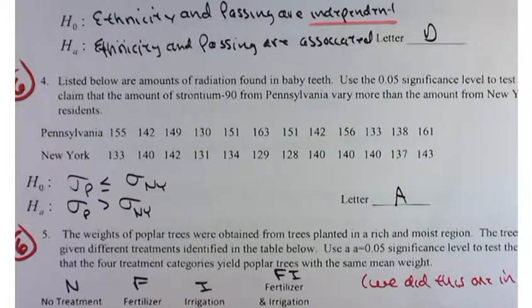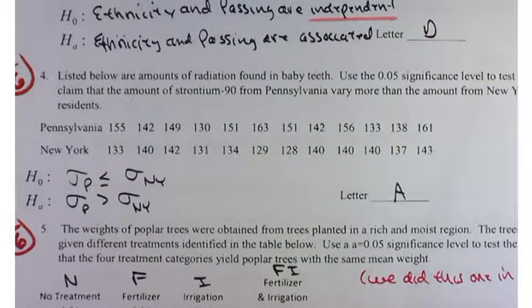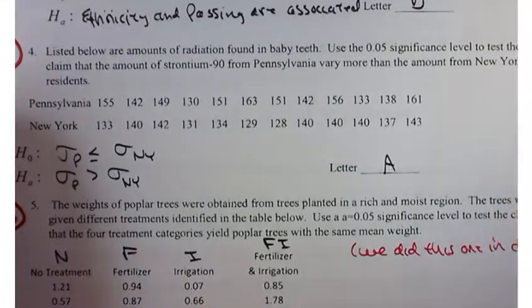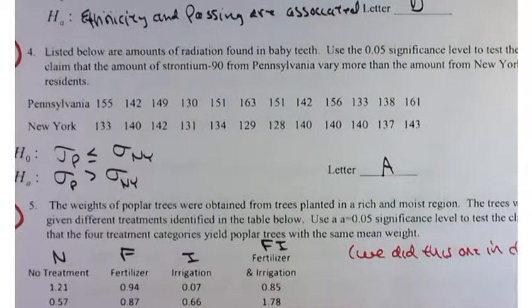Listed below are amounts of radiation found in baby teeth. Use the 5% significance level to test the claim that strontium 90 from Pennsylvania vary more than the amount from New York residents. I used basically the same data set for a question on your last test. This time, though, what's the key word in this part?